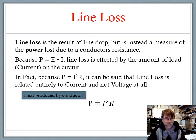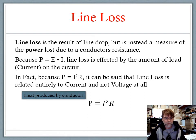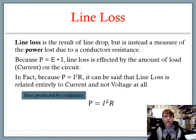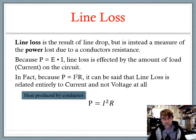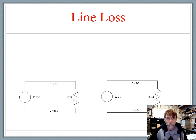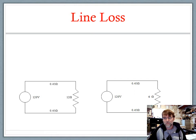Voltage becomes secondary in the whole conversation. Remember, this line loss — the power lost in the line — is all about the production of heat. Let's compare a couple of circuits. The one on the bottom left is the same circuit we've already crunched numbers on. On the right, we see the same circuit, but this time instead of a 12-ohm resistor, we have a 6-ohm resistor.